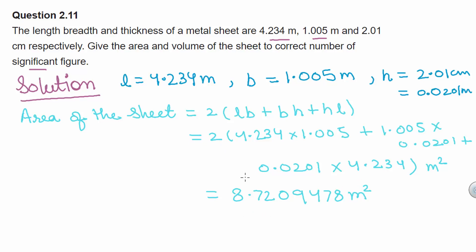Now we have to calculate this area of the sheet to correct number of significant figures. So how would we decide what are the correct numbers of significant figures? To decide this, look at your question. Here in the question the quantities are having three significant figures. So we will be calculating area and volume in three significant figures.